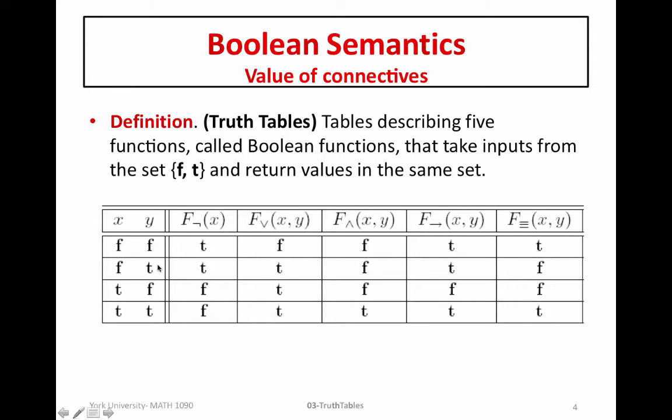So either they're both false, one is false and one is true, or they're both true. And now to formally define or construct a truth table we need to know how to expand our state, this function, over connectives.